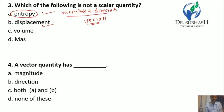Displacement, volume, and mass are scalar quantities. Question 4: A vector quantity has — as I mentioned, a vector quantity has magnitude plus direction. So the answer is both A and B.